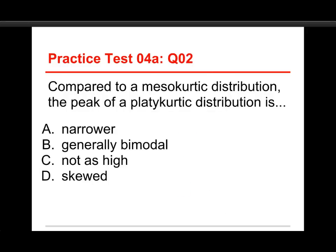Number two, compared to a mesocurtic distribution, the peak of a platycurtic distribution is, choices are narrower, generally bimodal, not as high, or skewed. Well, the answer to this one is not as high.